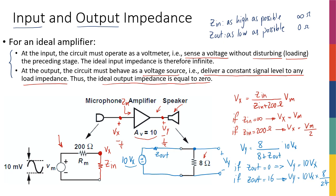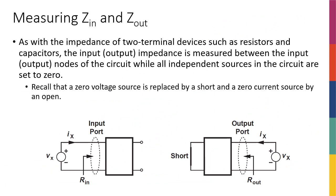Both input and output impedance are very important to get the gain we want. You may have designed your amplifier for a gain of 10, but when you connect it to an input source and an output load, those connections affect the gain. To make sure they don't, you need Z_in as high as possible and Z_out as low as possible. We'll never reach infinity or zero exactly, but we need to get as close as possible.